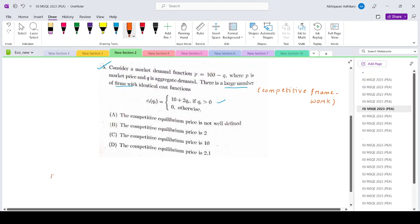So if you write down the profit expression of the forms, π_i will be price as a given parameter times quantity minus c_i. So that would be pq_i minus 10 minus 2q_i.